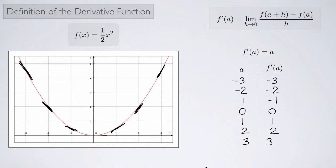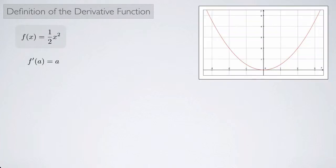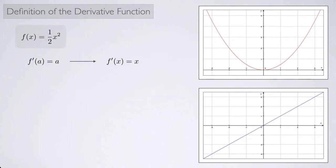We've checked specific points, but why not look at all of them? If f prime of a equals a, it's not a big leap to say f prime of x equals x for any value of x. That gives us a derivative function that we can graph. Matching it to the original: at negative 1, the tangent slope is negative 1; at 0 it's 0; at 2 the slope is 2, shown as the point (2, 2). This graph gives us the slope of the tangent line at any point x on the parabola.